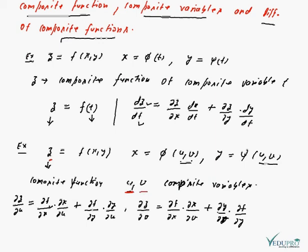This means the composite function z can be differentiated with respect to composite variables u and v. Del z over del u involves del f over del x and del f over del y, because z was a function of two variables x and y.